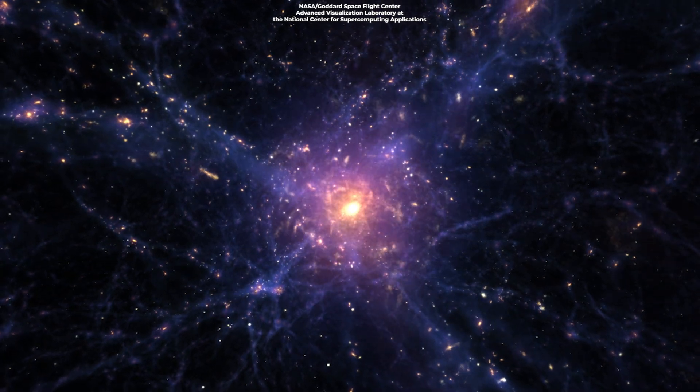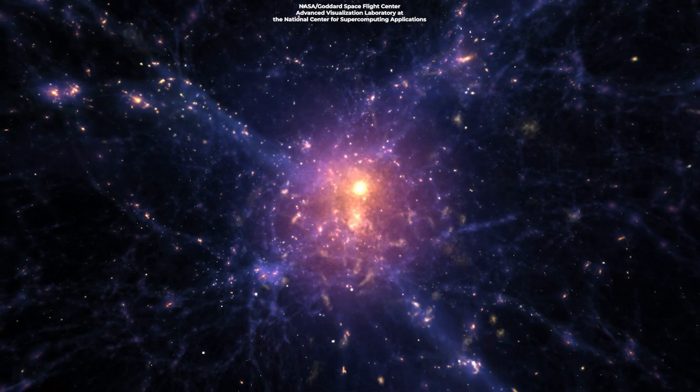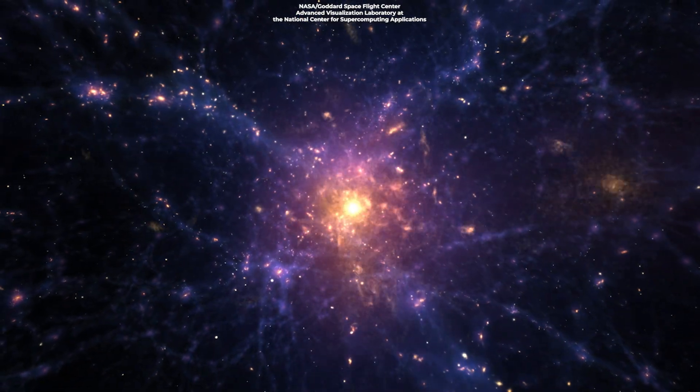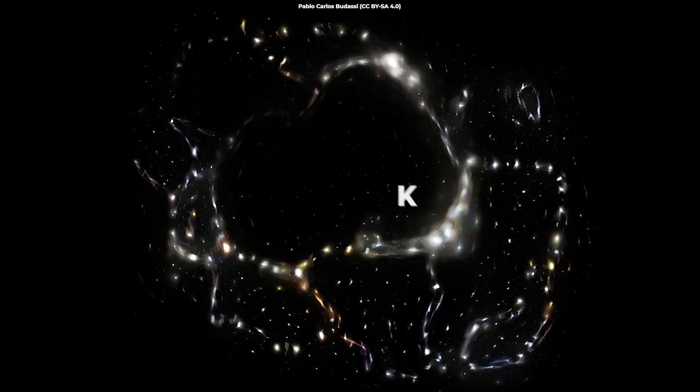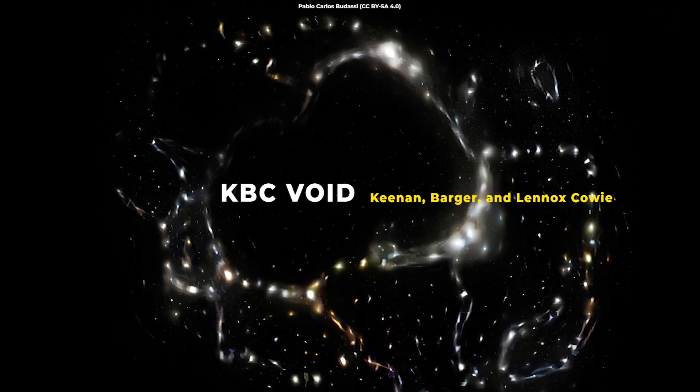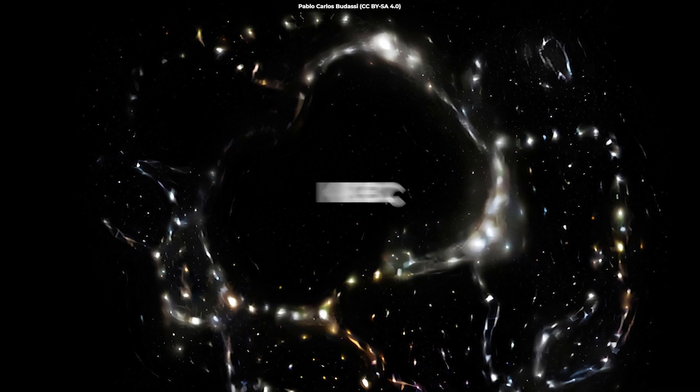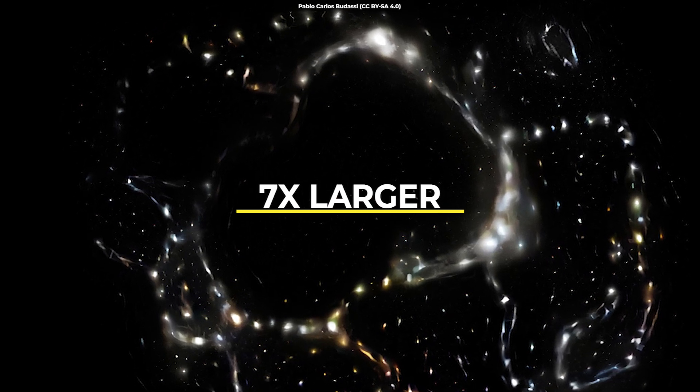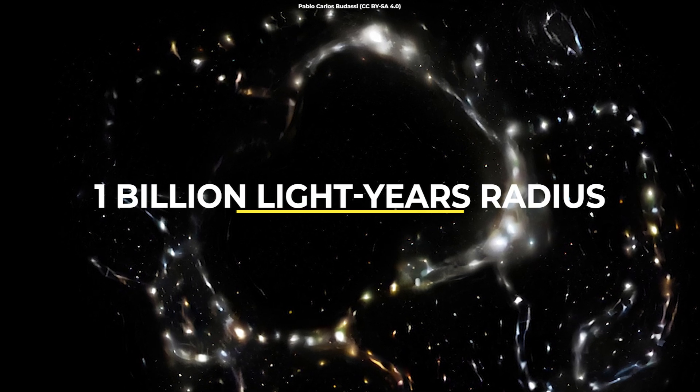Between these filaments, large voids exist, which are not completely empty, but are significantly less densely packed. The huge cheese hole in which we live is called the KBC void, named after Keenan, Barger, and astronomer Lennox Cowie. It is the largest cosmic void yet observed, about seven times larger than the average void, with nearly one billion light-years radius.